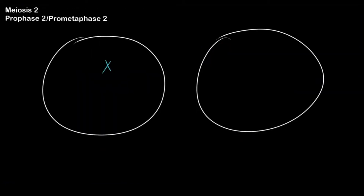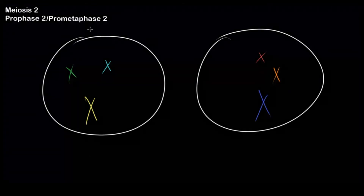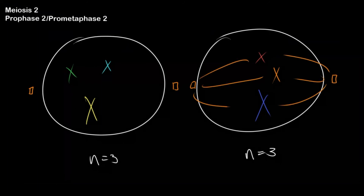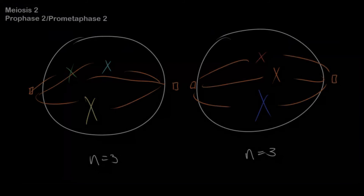In prophase 2 and prometaphase 2, we're going to have nuclear envelope breakdown and spindle fibers start forming and connecting to the chromosomes. The ploidy of each of these cells entering meiosis 2 is n equals 3 — both cells are haploid.